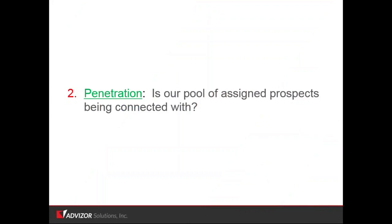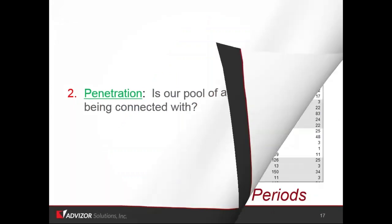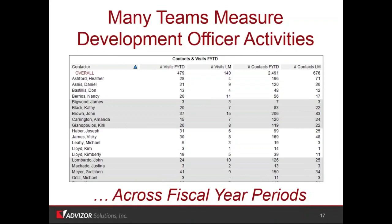Next question: we've got our prospects, we're going to add some in from that dinner. Is there a pool of assigned prospects being connected with? Typically what we see is people focus on visits. They measure development officer activities and often look at visits fiscal year to date, visits last month, contacts fiscal year to date, contacts last month. Let's focus on Heather Ashford, Daniel Asnes, and John Brown. It's the middle of the year and they've got 28, 31, and 37 visits fiscal year to date. They all look like they're doing pretty good — they're ahead of their peers. But it's hard to tell whether this is good or bad.